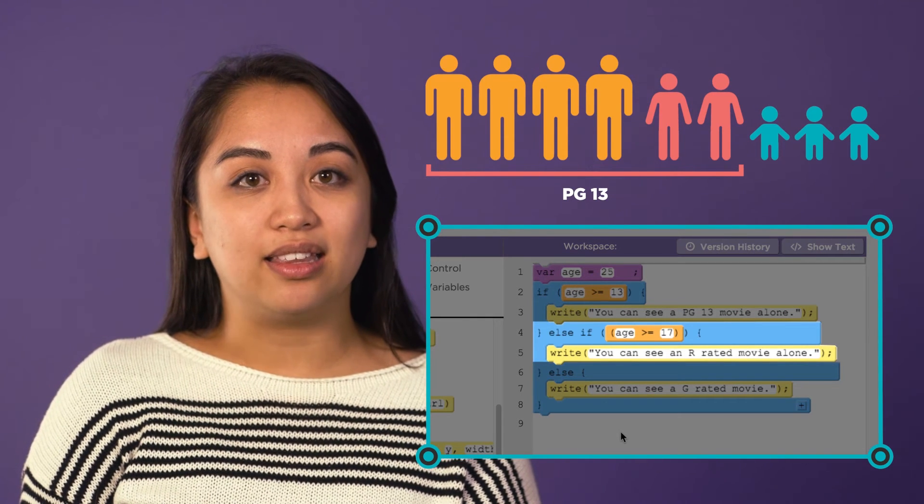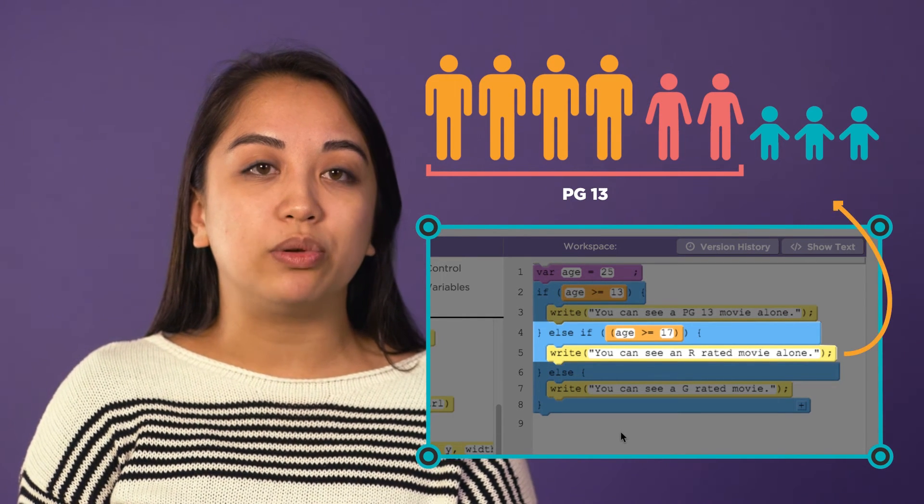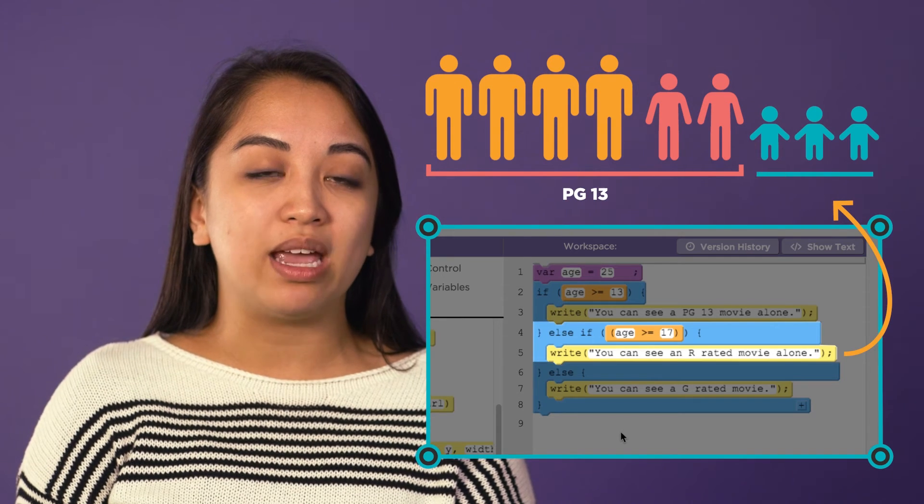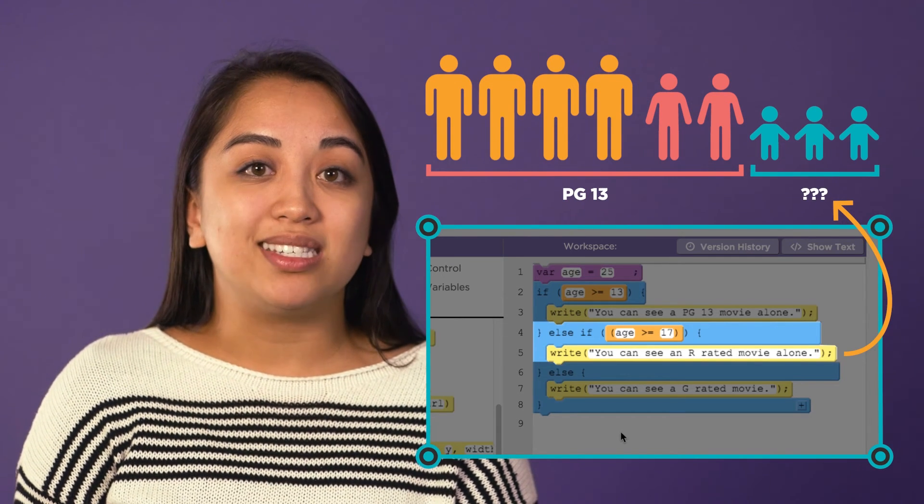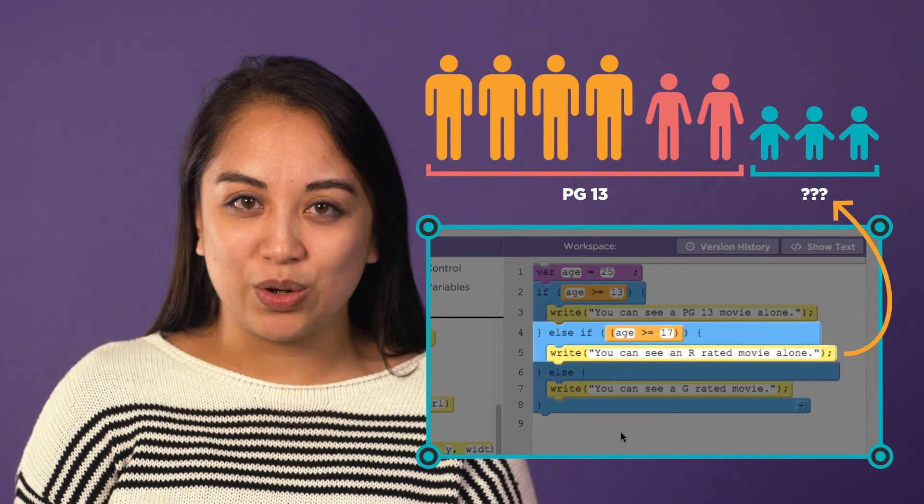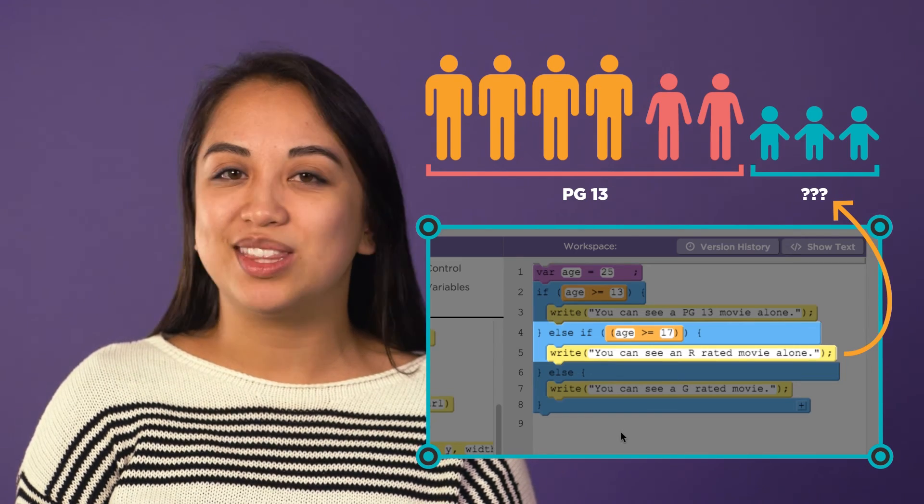And with the next else if line, the computer would be looking for people 17 or older in the remaining group. This code misses the adults because they were true in that first condition. This won't work.